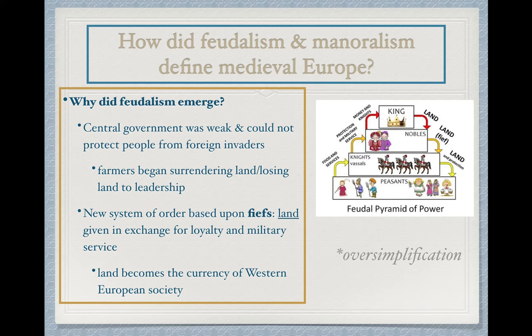We discussed this already and it might sound quite familiar because the circumstances are similar to the feudal system of Japan. When Charlemagne died, his efforts of reunifying Western Europe essentially died with him, and the central government was once again weak. There was no unifying force, and more importantly, the central government could not protect the people from foreign invaders.